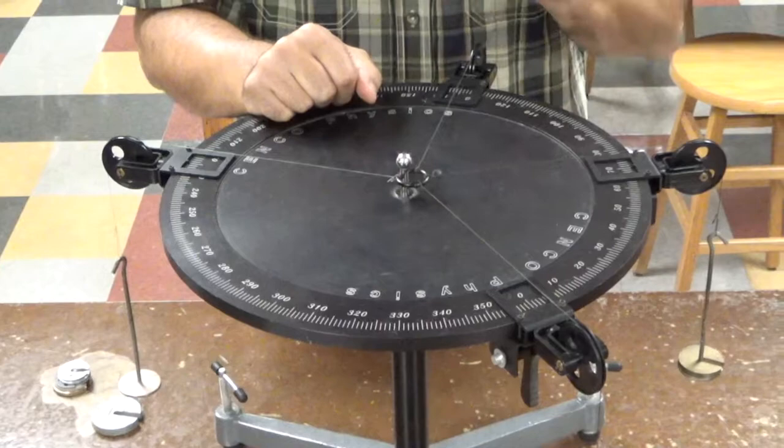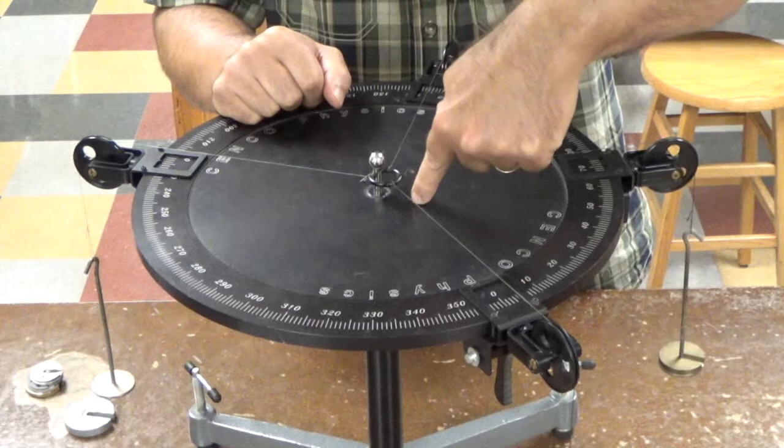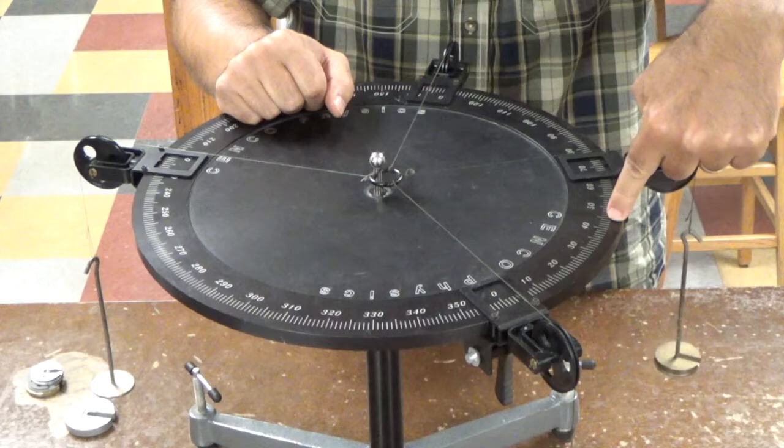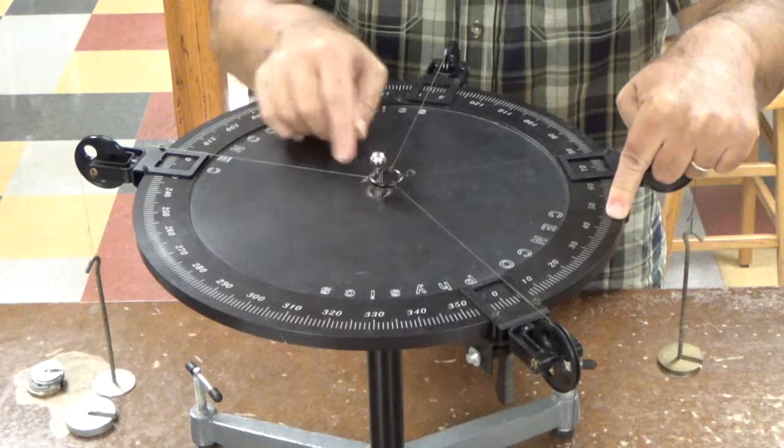So again, what we're saying is, these three pulling forces are equivalent to one pulling force of 232 grams at 45.2 degrees. So I could replace these three strings with one string right at 45 degrees, approximately, and have 232 grams on that, and that would be equivalent to these three pulling forces.